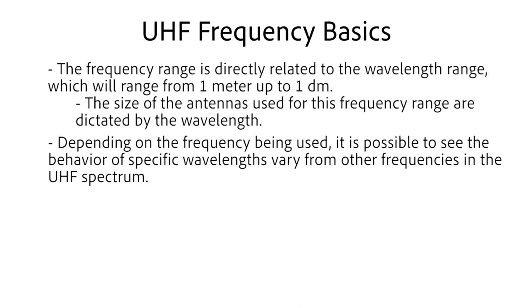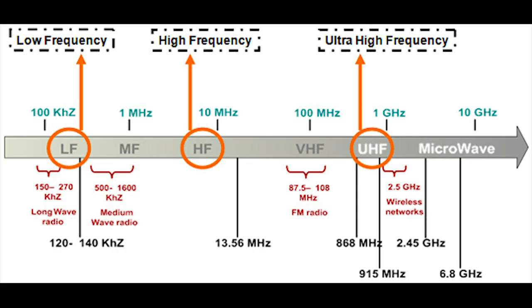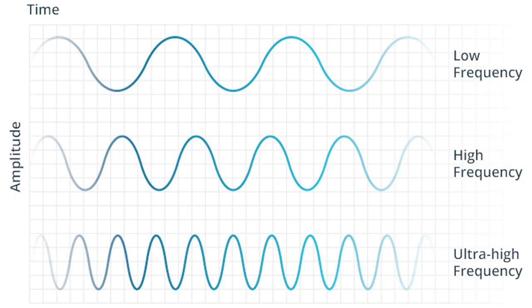Depending on the frequency that is being used, it is possible to see the behavior of specific wavelengths vary from other frequencies in the UHF spectrum. For instance, on the low end of the UHF spectrum, the wavelengths are much further apart and they will propagate much differently as opposed to waves on the high end of the spectrum. In most cases, wavelengths in this spectrum propagate by line of sight. However, some ground reflection is possible on the lower frequencies.